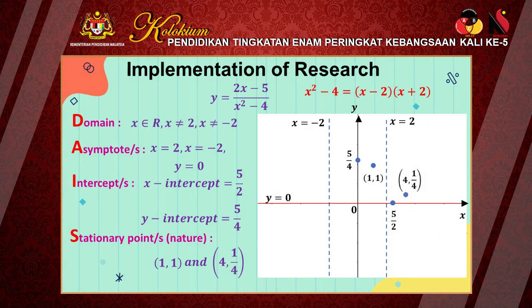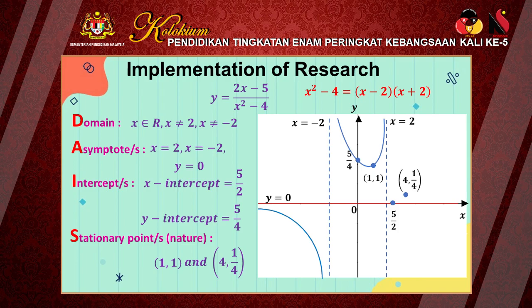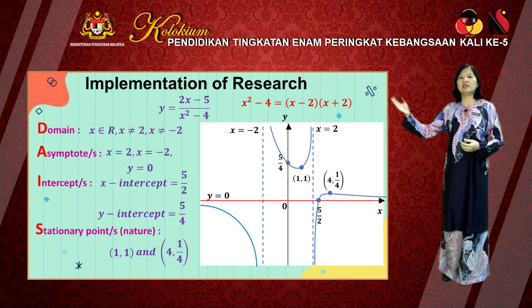There are 3 parts in this graph based on the vertical asymptote lines. For the first part on the left-hand side, since the values of x are negative and the values of y are also negative, the curve is at the bottom part. Then the middle part — the curve must pass through the y-intercept and the stationary point, so the curve is drawn facing upwards to pass through these two points. Finally, the last part — the curve must pass through the two points following the asymptotes. This is the final sketch of the curve.